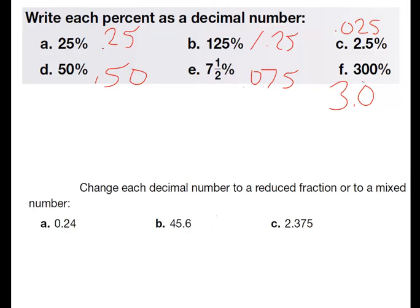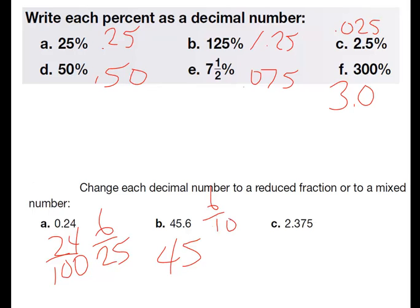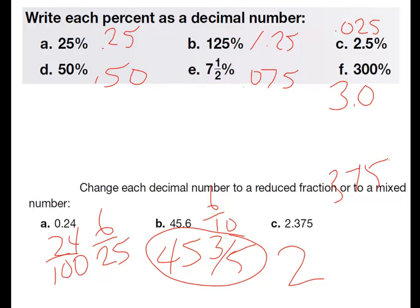Let's look at our next ones. Change each decimal to a reduced fraction or to a mixed number. 0.24 is going to be 24 over 100, which reduces down to 6 over 25. Let's take a look at B. We're going to have the 45 out here already. Then we have 6 over 10, so reduce that down to 3/5. So you're going to have 45 and 3/5. And then C, we've got our 2 out here, and then 375 over 1,000. And when you reduce that down, that's going to reduce all the way down to 3/8. So 2 and 3/8. You've got to be able to do this. Don't skip this. This is important.